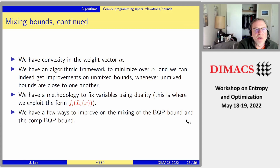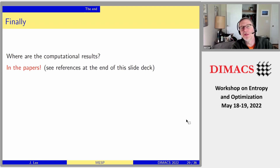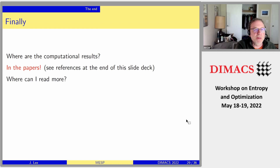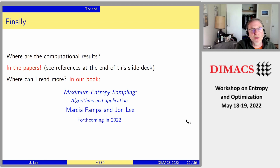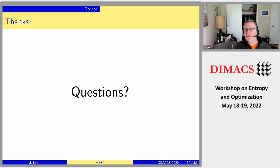To wrap up: we have papers on mixing bounds, and the computational results are in the references at the end of the slides. I don't like to show computational results in real time because the axes are never explained. There's also a book we're publishing this year where you can see everything in one place without wrestling with different notation across papers. The remaining slides are just references.